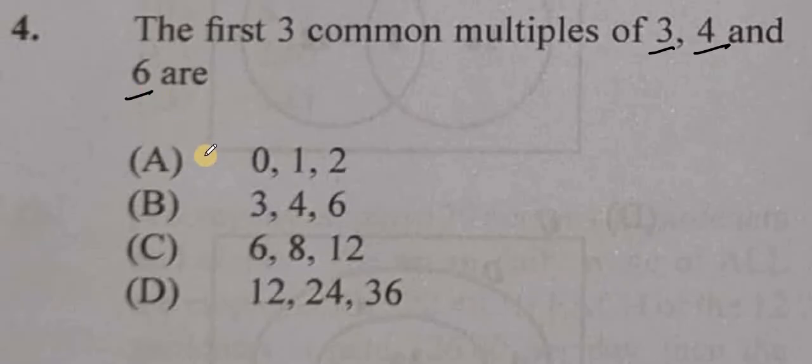Which of these sets will contain the multiples of these three numbers? A is out because 0, 1, and 2 are factors of, let's say, 4 and 6 but not 3. But we're not looking for factors, we're looking for common multiples.